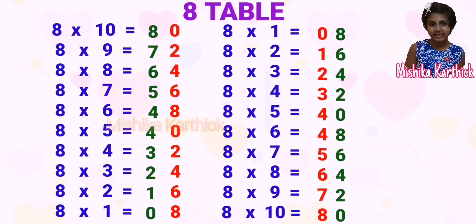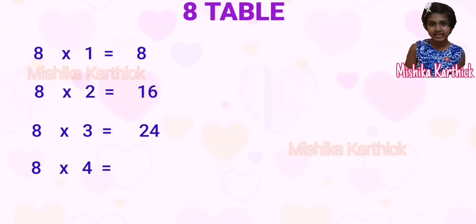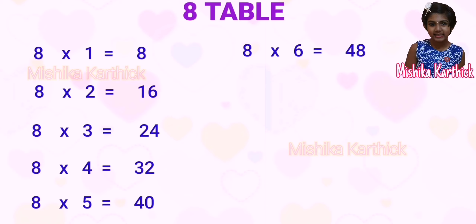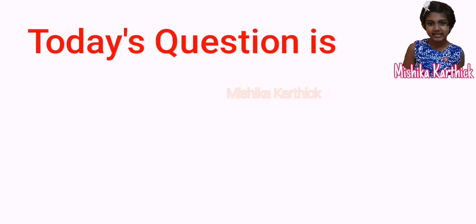Now let's see the 8 times table: 8 ones are 8. 8 twos are 16. 8 threes are 24. 8 fours are 32. 8 fives are 40. 8 sixes are 48. 8 sevens are 56. 8 eights are 64. 8 nines are 72. 8 tens are 80.